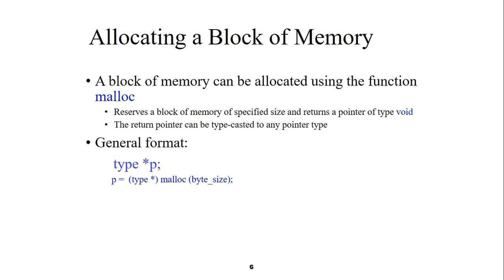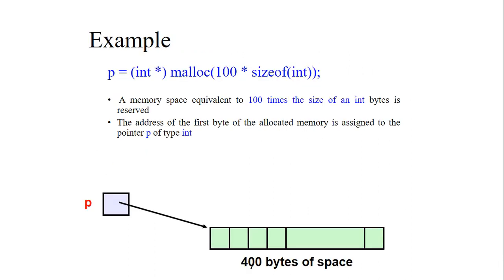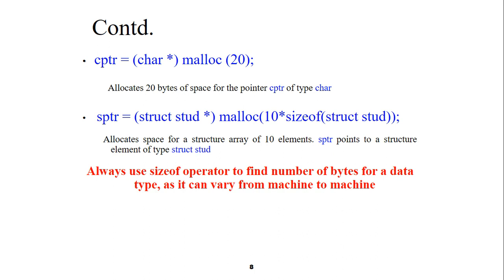For example, if p is assigned using malloc — p is a pointer created for the use of the malloc function — we write: p = (int*) malloc(100 * sizeof(int)). A memory space equivalent to 100 times the size of an integer byte is reserved. The address of the first byte of the allocated memory is assigned to the pointer p of type integer. If a single integer uses 4 bytes, then 100 integers will use 400 bytes of memory space.